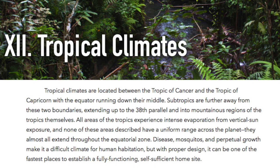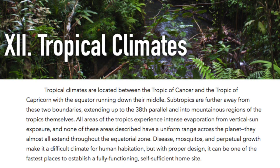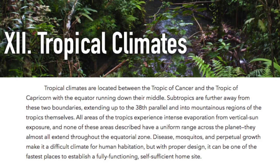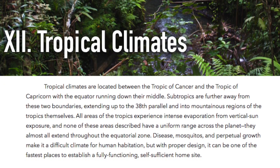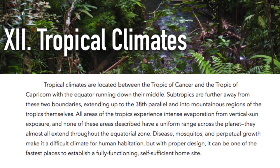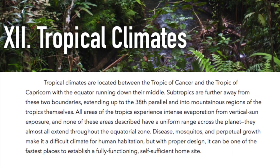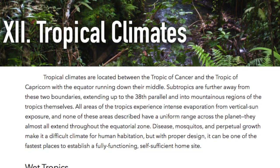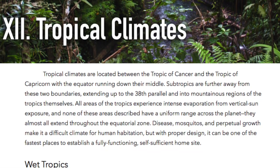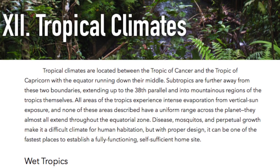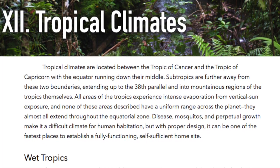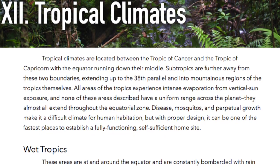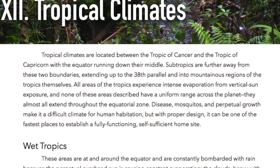Chapter 12: Tropical Climates. Tropical climates are located between the Tropic of Cancer and the Tropic of Capricorn, with the equator running down their middle. Subtropics are further away from these two boundaries, extending up to the 38th parallel and into the mountainous regions of the tropics themselves. All areas of the tropics experience intense evaporation from vertical sun exposure, and none of these areas have a uniform range across the planet — they almost all extend throughout the equatorial zones.